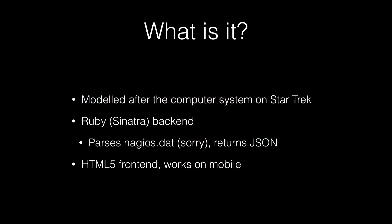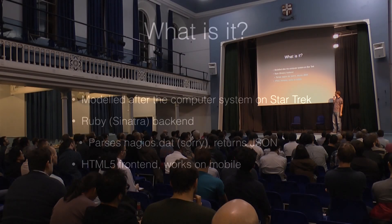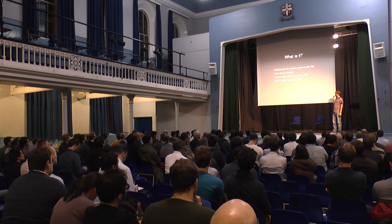It's a Ruby application, obviously modeled after the computer system on Star Trek. It's built in Sinatra, and it parses the Nagios data file, and then converts that into JSON, which is then served out to the HTML5 frontend, so it works on mobile.